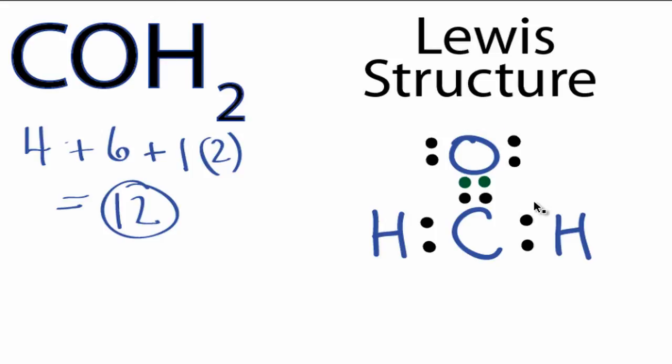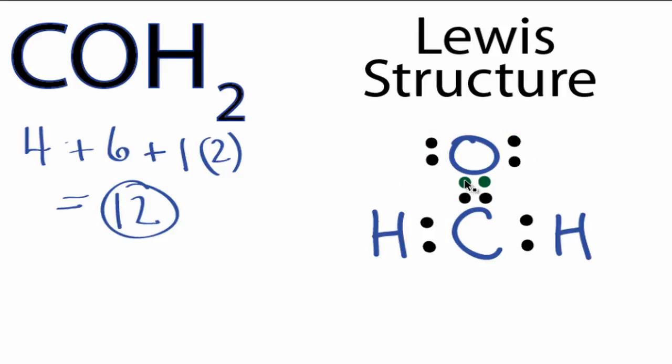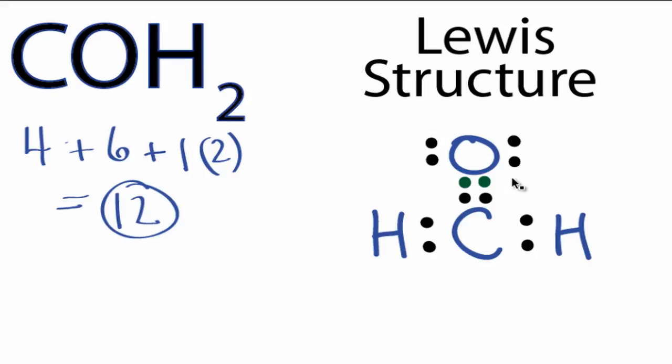So by creating that double bond, oxygen still has 8 valence electrons, and now carbon also has 8 valence electrons. We've used all 12 valence electrons, and each of the atoms has a full outer shell. So this is the Lewis structure for COH2. This is Dr. B, thanks for watching.